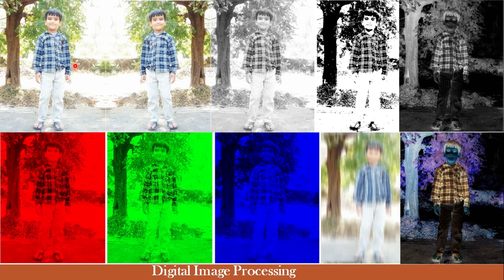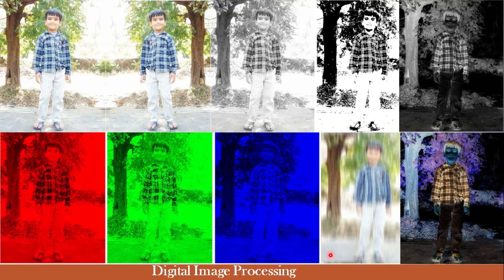Here are some examples of digital image processing. From an original image, you can convert it to a mirror image, convert it to a monochrome or grayscale image, convert it to a binary image with only two levels, get the negative of the monochrome image, extract the red, green, or blue channel image, blur the image, or get the negative of the original color image. Beyond these, you can also do image segmentation, edge detection, filtering, and extraction — numerous processes are possible using digital image processing.